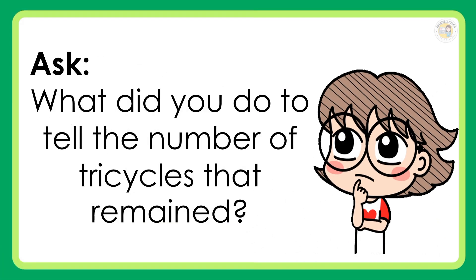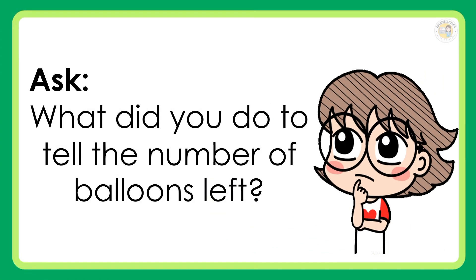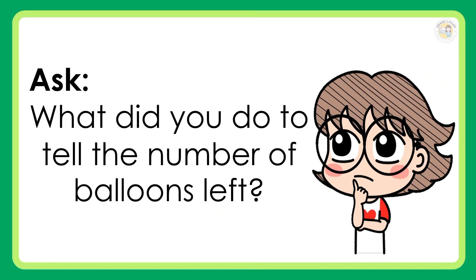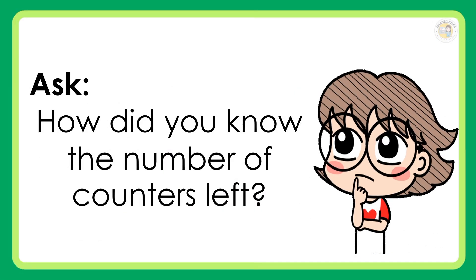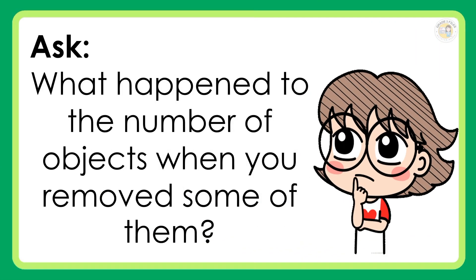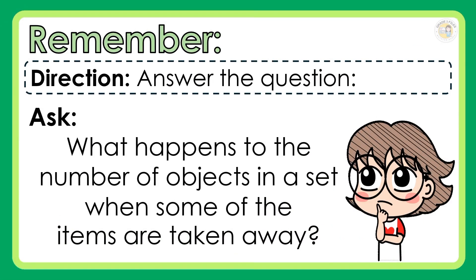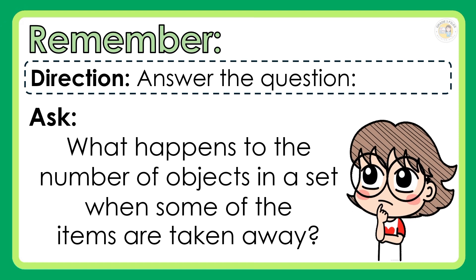What did you do to tell the number of tricycles that remained? What did you do to tell the number of balloons left? What did you do to tell the number of birds that stayed on the branch? What did you do to know the number of counters left? What happened to the number of objects when you remove some of them? Direction: Answer the question — What happens to the number of objects in a set when some of the items are taken away?